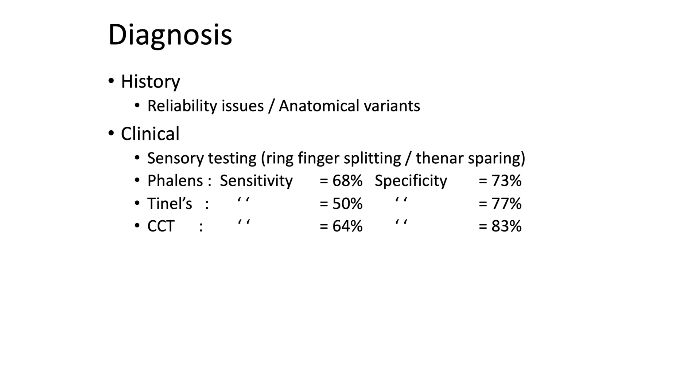Clinically, ring finger splitting and thenar sparing are strong diagnostic evidence. Provocative tests include Phalen's, Tinel's, and carpal compression tests, each with known sensitivity and specificity figures. Nerve conduction tests have a role but this is a clinical diagnosis — not a neurophysiological one. Having positive nerve conduction tests is not the be-all and end-all; I use them when I have mixed symptoms and need more certainty, bearing in mind they have high false positives. Results must be interpreted in context with history and examination findings.